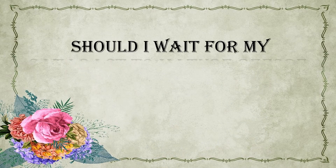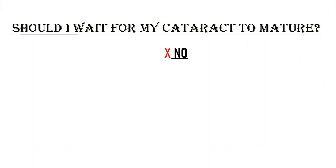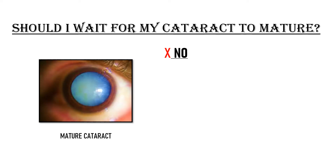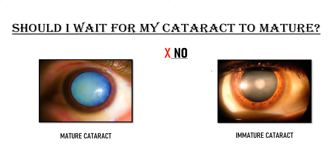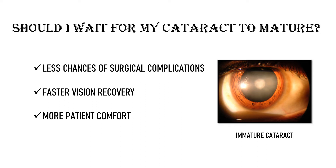Should I wait for my cataract to mature before going for surgery? No. Nowadays we don't wait for cataract to mature. Mature cataract is an advanced stage when the entire lens becomes opaque and the patient cannot see at all. Immature cataract is when some layers have turned opaque while others are still transparent. We prefer to operate on immature cataract because surgical complications are far less likely, vision recovery is faster, and patient comfort is greater. I would not advise you to wait — if you suspect an eye problem, please consult your ophthalmologist immediately.